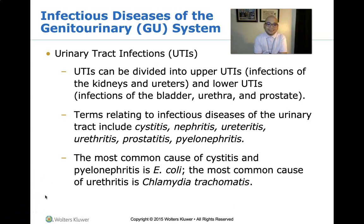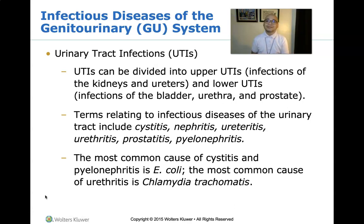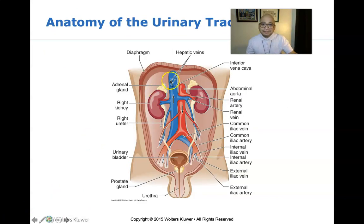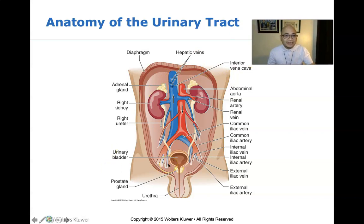Pyelonephritis is a kidney infection — a type of UTI that generally begins in the urethra or bladder and travels to one or both kidneys. It requires prompt medical attention and is a serious condition. The most common cause of cystitis and pyelonephritis is Escherichia coli. The most common cause of urethritis is Chlamydia trachomatis, an example of a sexually transmitted infection.